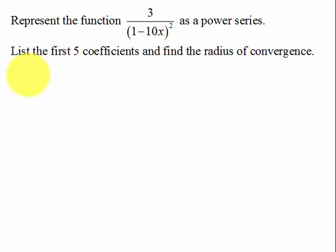We want to represent this function as a power series, and we go back to the one thing we know, which is we have this power series of u to the n, that is 1 over 1 minus u. But the problem here is we have a constant 3, that's fine, but in the denominator we have 1 minus u, but it's quantity squared.